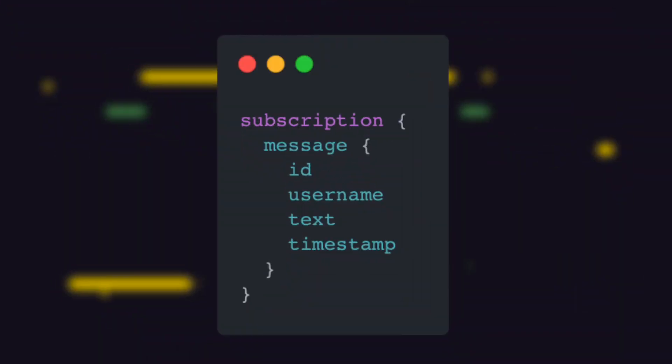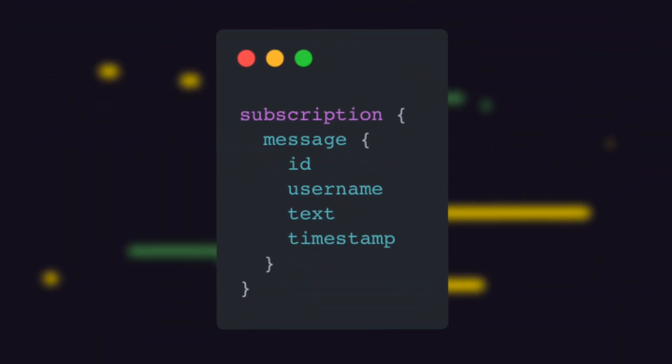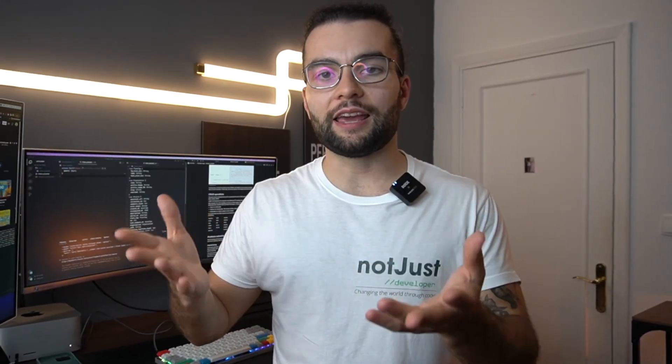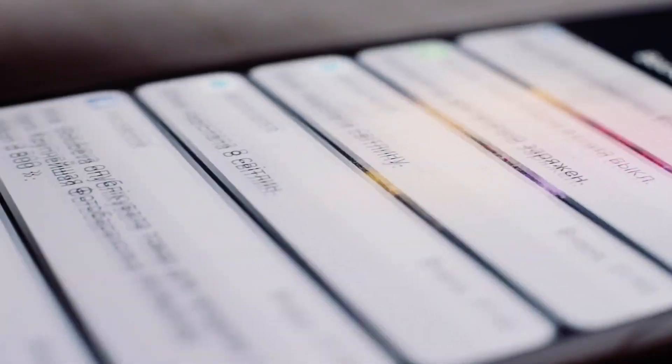For example, if you're building a chat application, you'd want to subscribe to new messages, and as soon as a new message reaches your backend, you want to notify users of that chat room that there are new messages and display them. With a GraphQL subscription, that is super easy to do — you don't have to go deep into WebSockets to implement this.